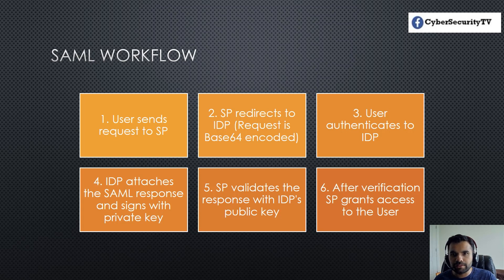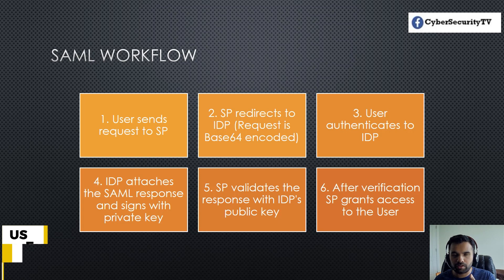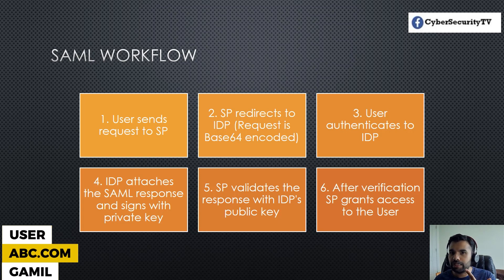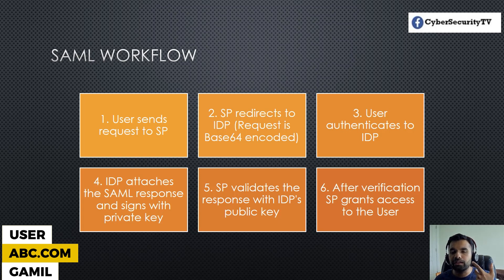So in this case, there are three essential parties. One, you have the user who wants to authenticate. One is abc.com, which is the service provider, which you want to get authentication for. And then there is Gmail, which is called the identity provider.